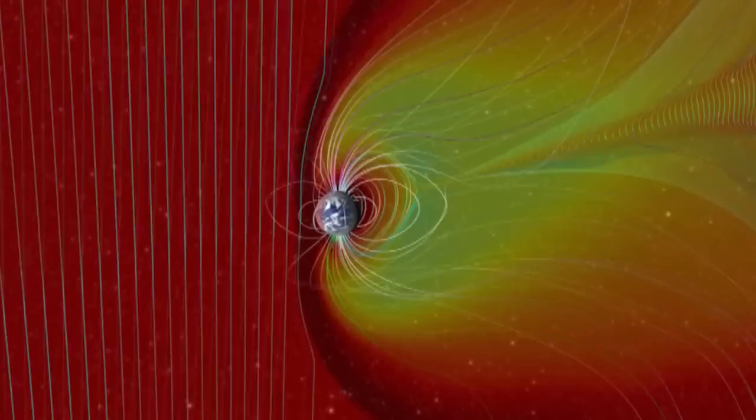Even the field and plasma trailing behind the Earth are more strongly distorted.